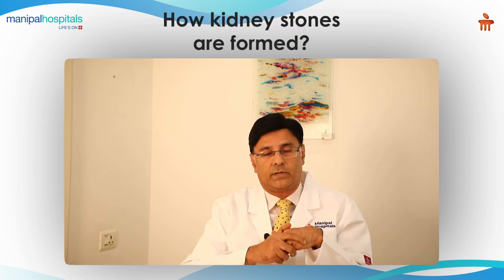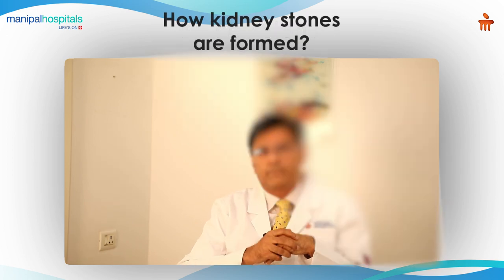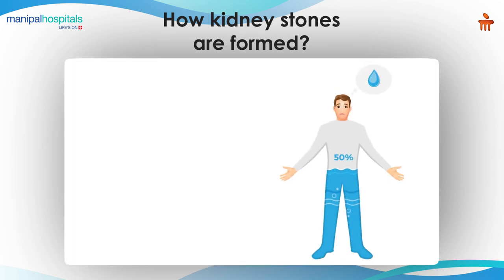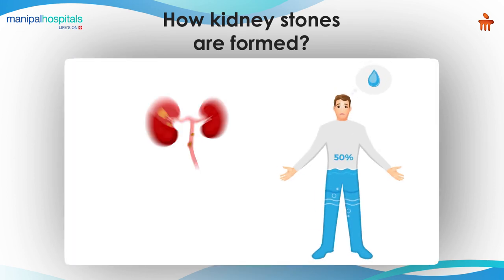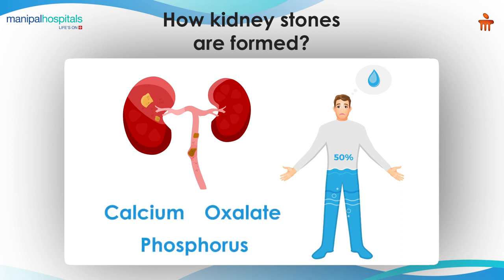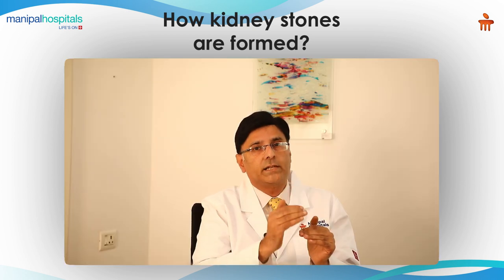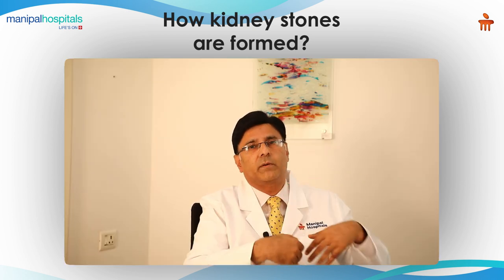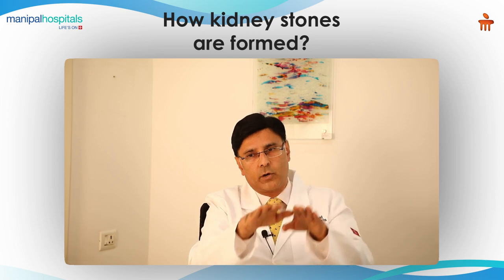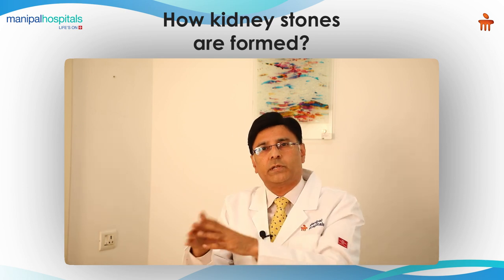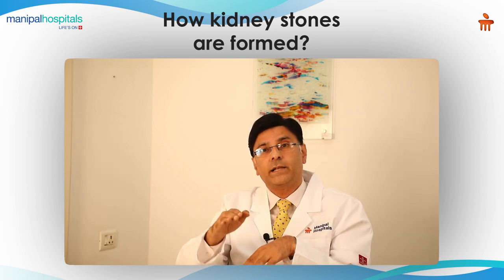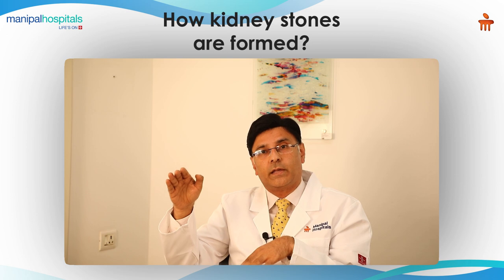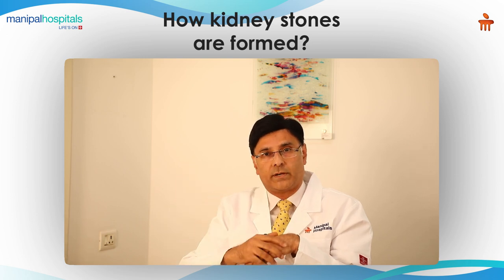How is it formed? When the body's water level comes down and metabolic products like calcium, oxalate, and phosphorus increase, the stone forms and crystallizes within the kidney. Alteration in temperature also plays a role — when there is high temperature and the person sweats a lot, or when exposed to low temperature, and alteration in altitude — all these cause kidney stone formation.